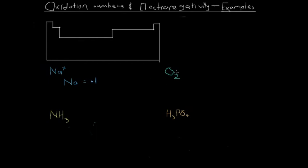This next example is not a compound but it is a molecule. We've got a symmetrical structure, so the two oxygen atoms are in the same situation — they're both bonded to another oxygen atom. Because their oxidation numbers are the same and the net charge on the oxygen molecule is zero, the oxidation number of each oxygen atom is going to be zero.